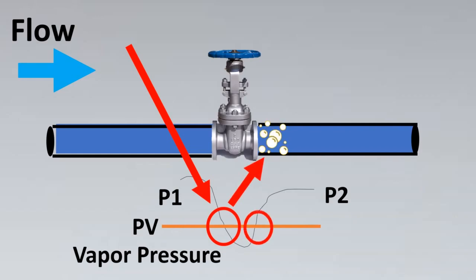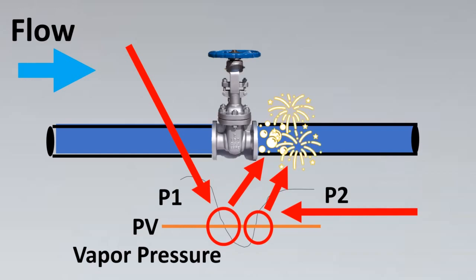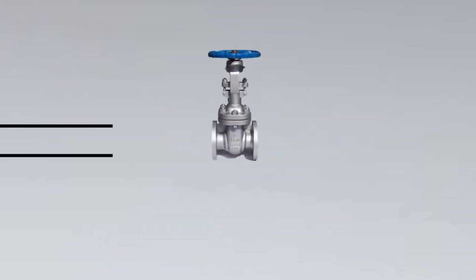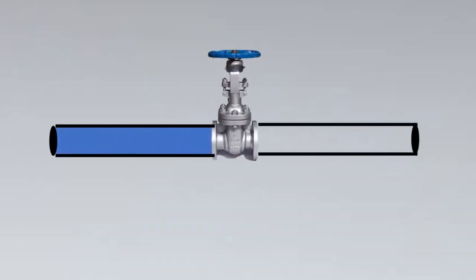On the exact opposite side, the vapor is going to turn back into liquid state. What happens is the bubbles are going to burst to come back to liquid state, which is called popping. This has very high velocities that can damage the valve and the piping downstream. This entire phenomenon is called cavitation.